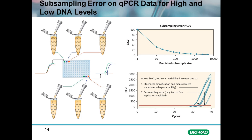The only way to circumvent subsampling error is to take more of the sample. Instead of taking only three technical replicates, it's important to take many more — perhaps six, eight, or even ten technical replicates — to achieve a larger sample of the original interrogated in qPCR. The average of all subsamples is then taken to get the average CQ value, which is more representative of the actual amount of DNA in the sample.